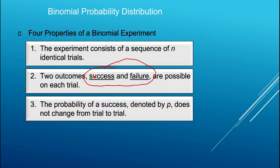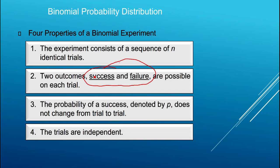Property three is that the probability of success, which we'll denote by p, doesn't change from one trial to the next — it's constant across trials. One minus p will be the probability of a failure. And property four: the trials are independent of each other, which allows for a very simple application of the multiplication rule in deriving the binomial probability function.